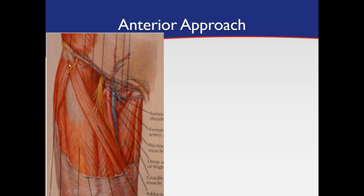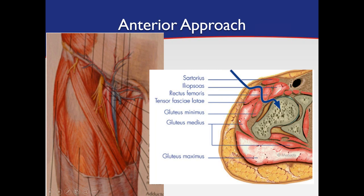Our interval is right between these two muscles. This cross-sectional picture shows the tensor fasciae latae and the sartorius, and deep to those we go in between the vastus lateralis and the rectus femoris. This structure is the hip capsule — basically, you go between the two muscles and you're right down onto the hip capsule. The key benefit of this approach is that we don't actually have to cut any muscle — we go right in between them, and the muscles stay intact in probably 90% of surgeries.